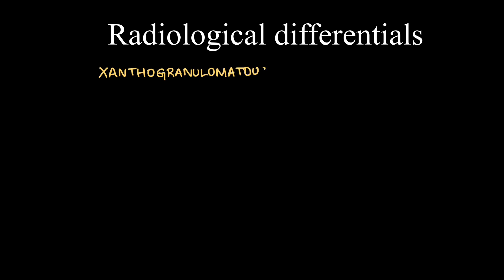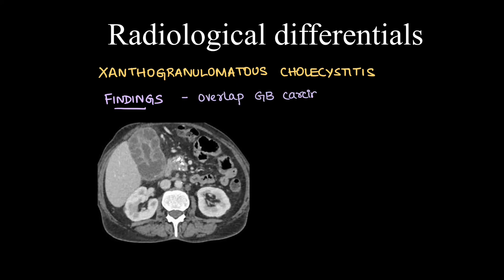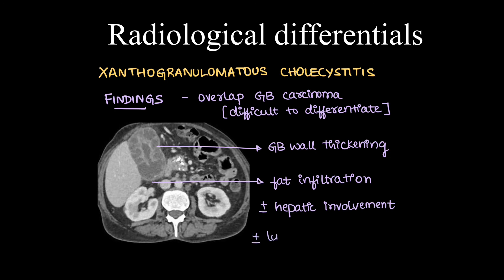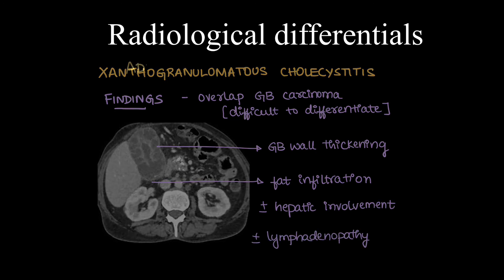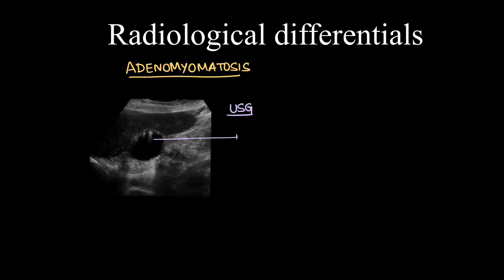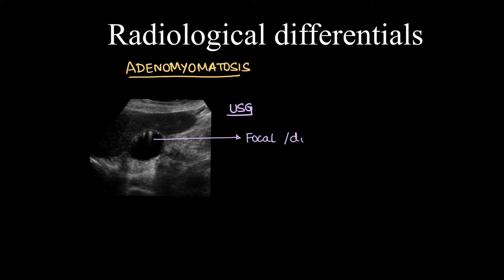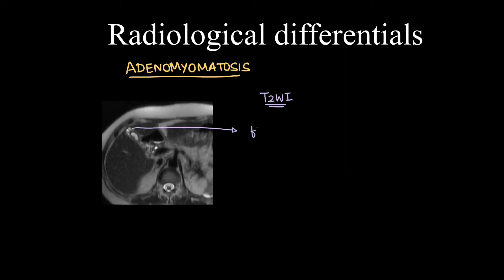An important differential to consider is xanthogranulomatous cholecystitis, which is very difficult to differentiate radiologically because its findings are similar to gallbladder carcinoma on all imaging. It presents similarly with GB wall thickening, adjacent fat infiltration in the form of stranding, with or without hepatic involvement and with or without lymphadenopathy. Next differential is adenomyomatosis, which on ultrasound can present as focal or diffuse GB wall thickening with ring-down artifacts — these are due to proliferation of Rokitansky-Aschoff sinuses within the wall of the GB. MRI is used to differentiate this from malignancy, where on T2-weighted imaging we can see focal wall thickening with dilated sinuses.